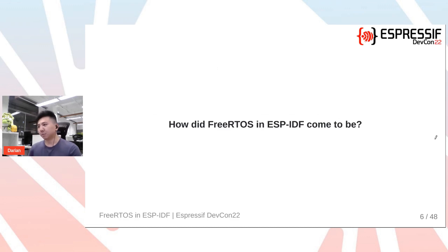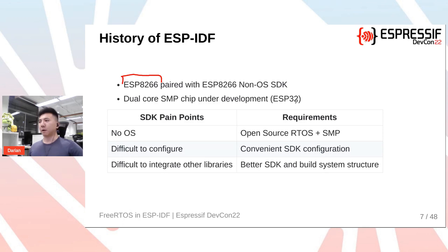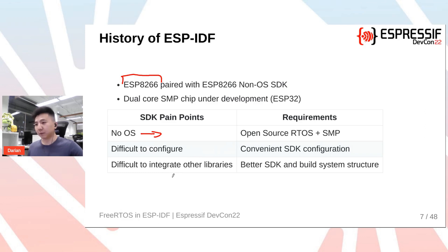Let's talk about some history — how did ESP-IDF come to use FreeRTOS? A long time ago there was a chip called the ESP-8266, paired with the ESP-8266 non-OS SDK. It was a single-core Xtensa architecture Wi-Fi SoC. At the same time, a dual-core Wi-Fi SoC called the ESP-32 was under development. The pain points of the non-OS SDK were: no operating system for task scheduling, difficult configuration via header file macros, and difficulty integrating third-party libraries due to no clear project structure.